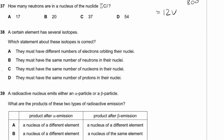Question 37. How many neutrons are in a nucleus of chlorine-37? Neutrons equal mass number minus proton number: 37 − 17 = 20. The answer is B.